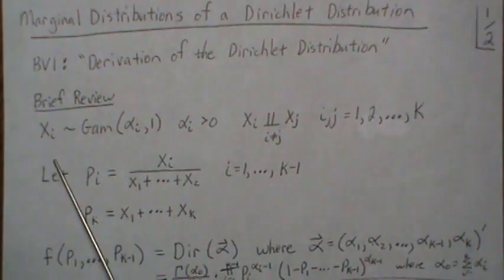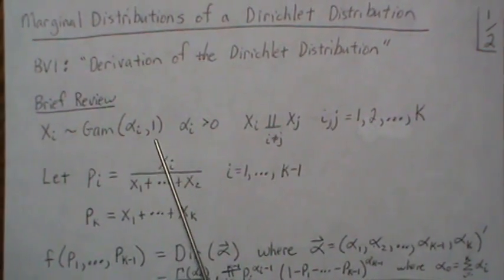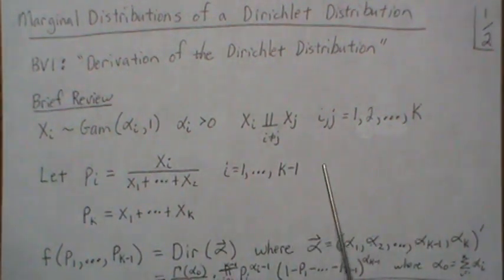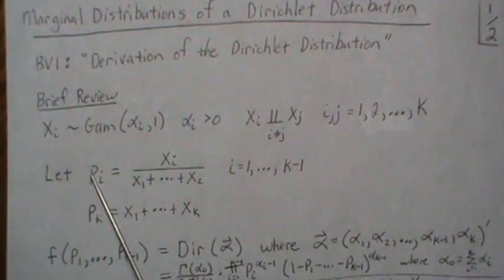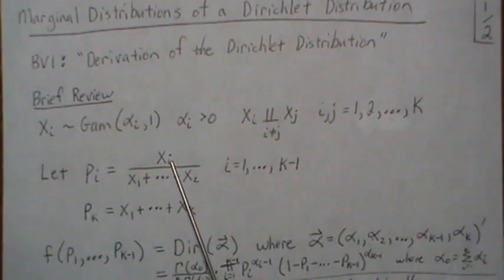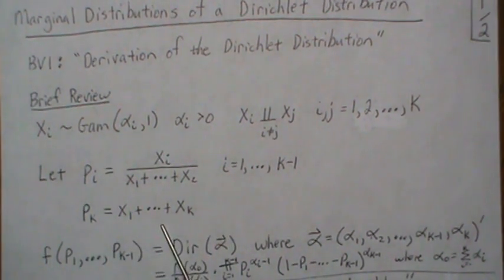In this video we let the Xi be gamma random variables, Xi1, and they're independent and we go from 1 to K, and we set up a transformation of random variables, Pi, which is Xi over the total sum, and then PK was this total sum.